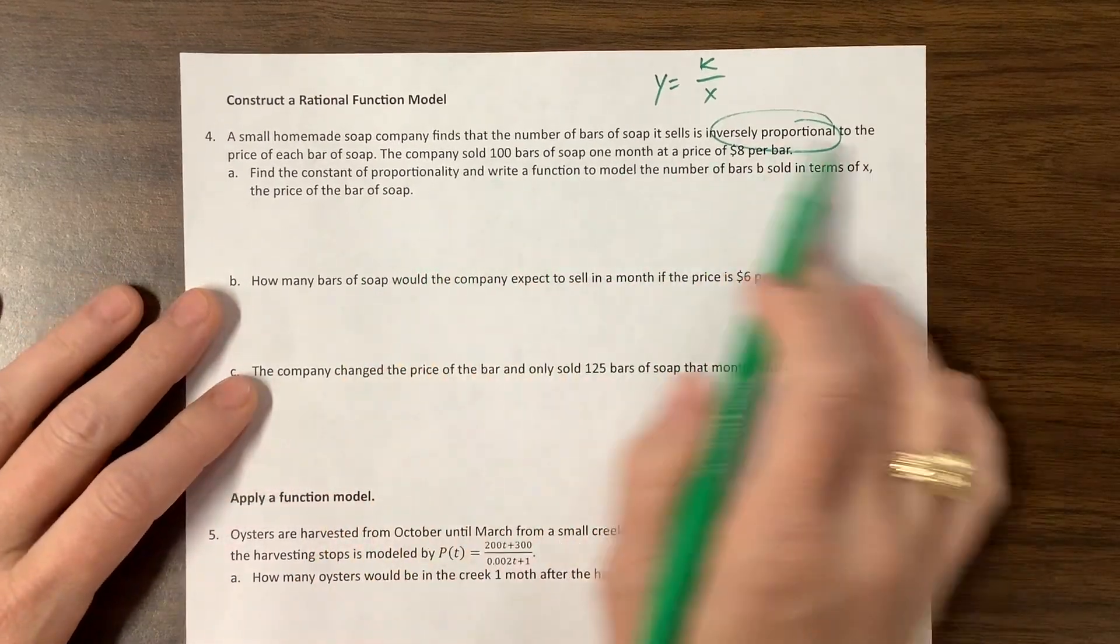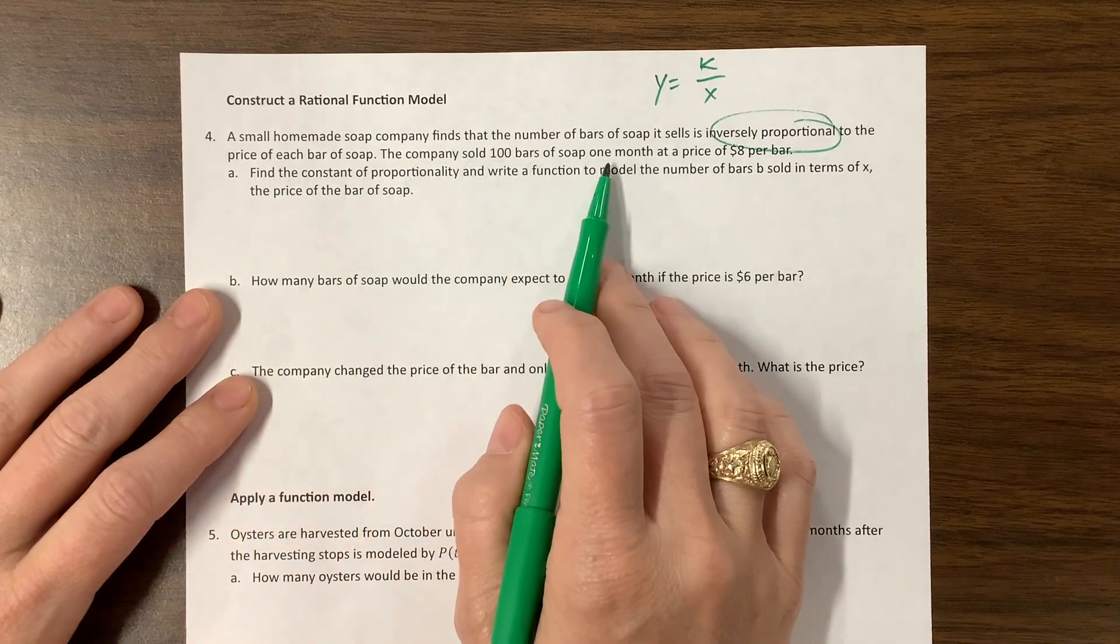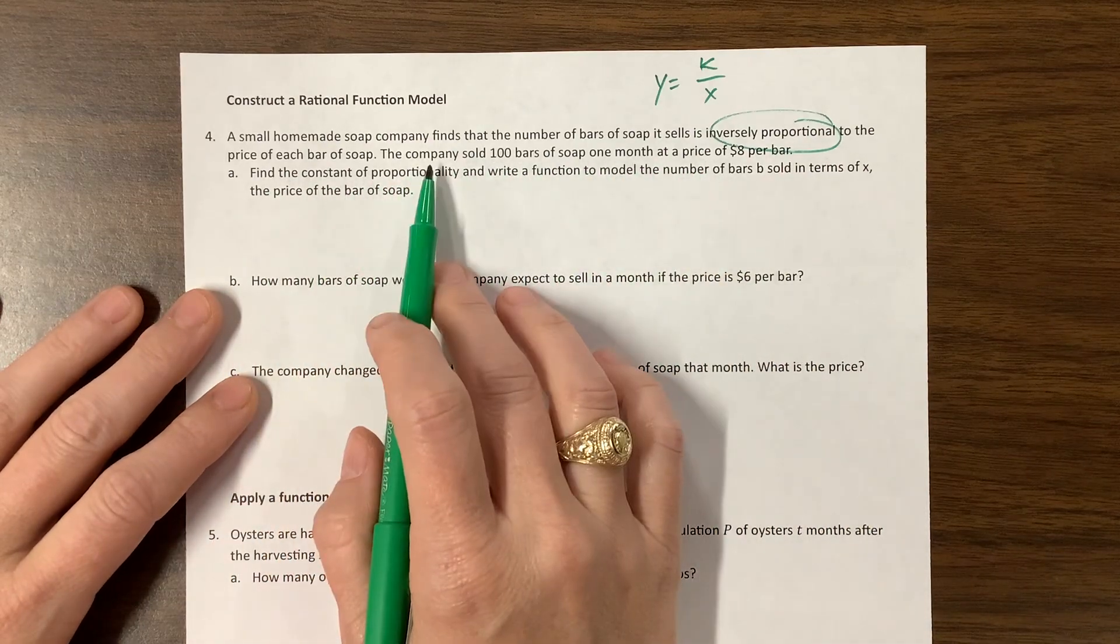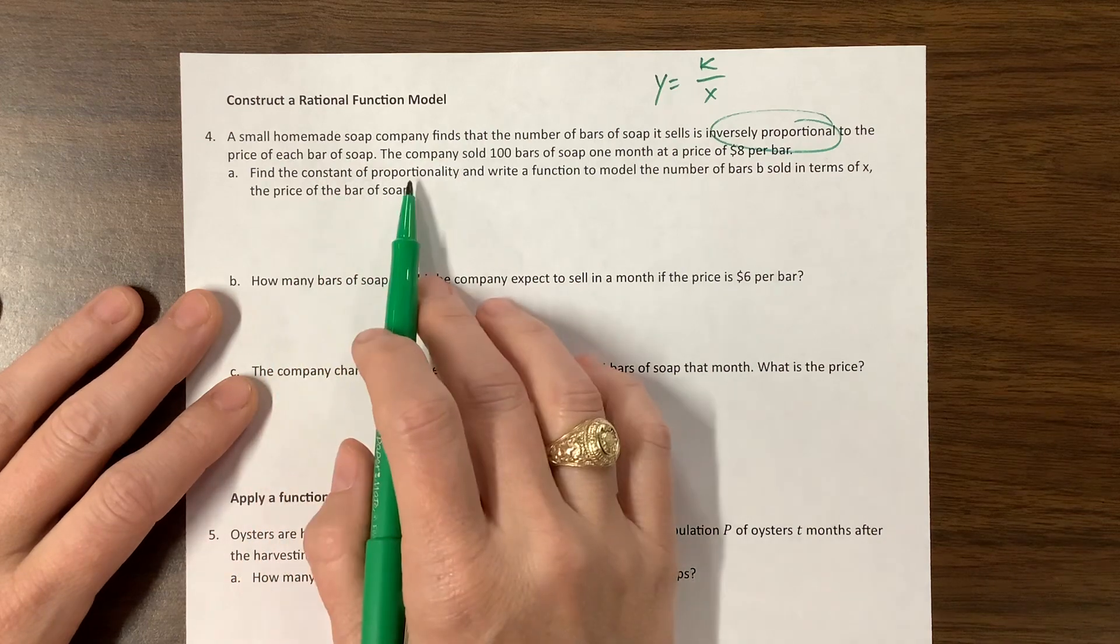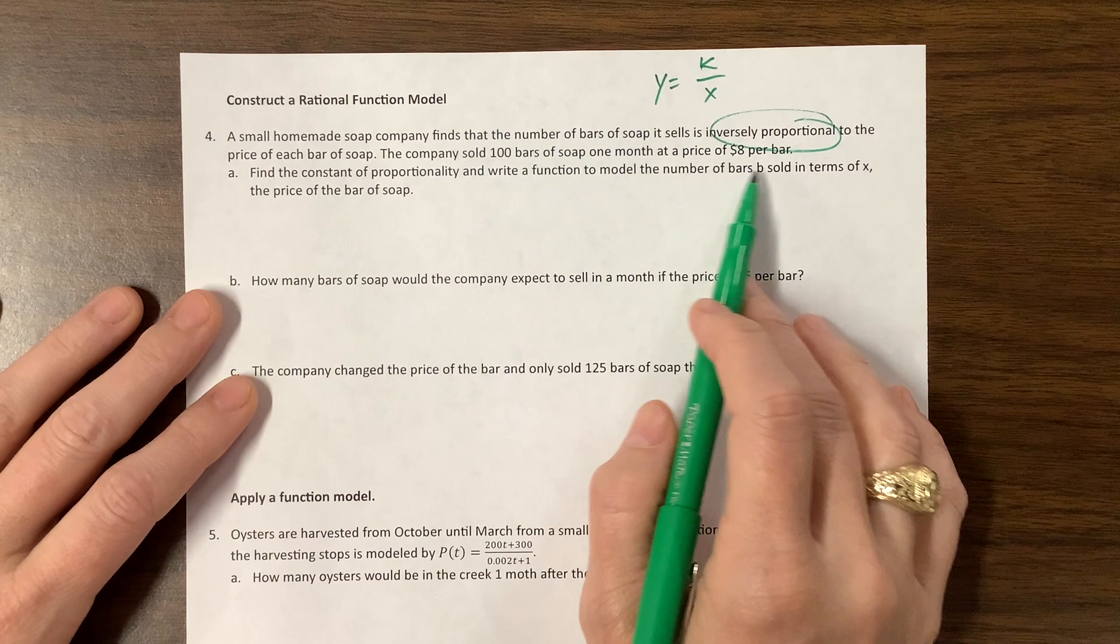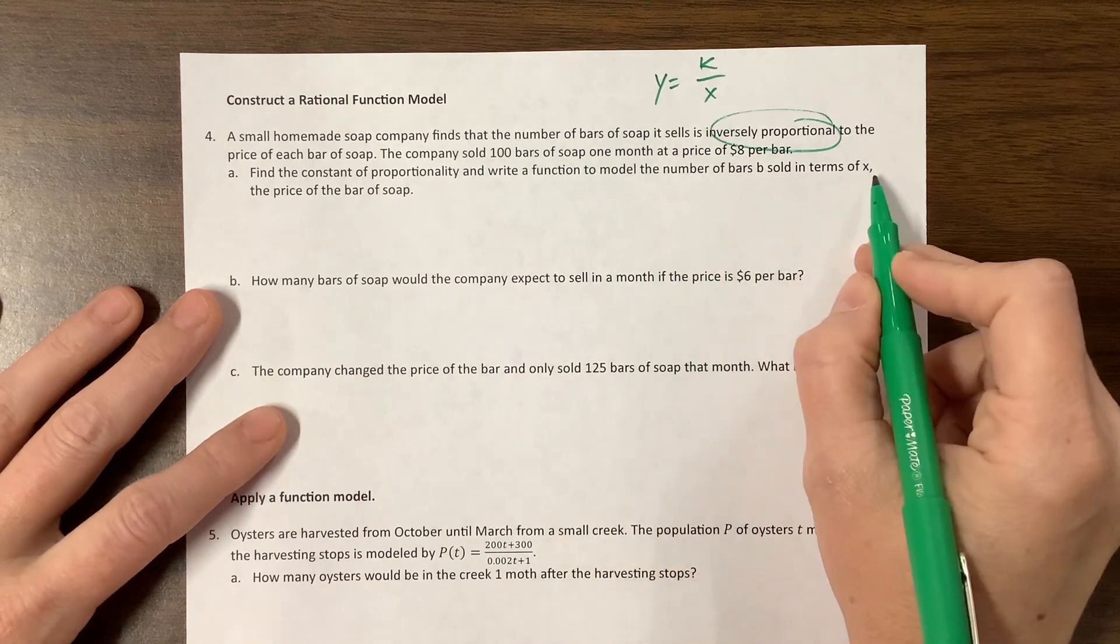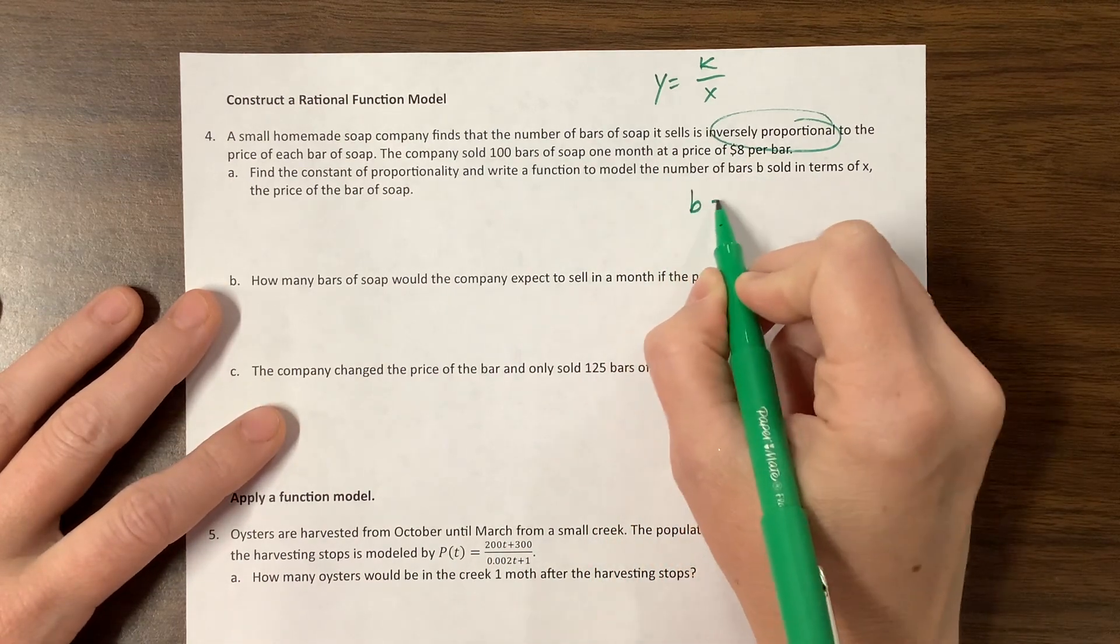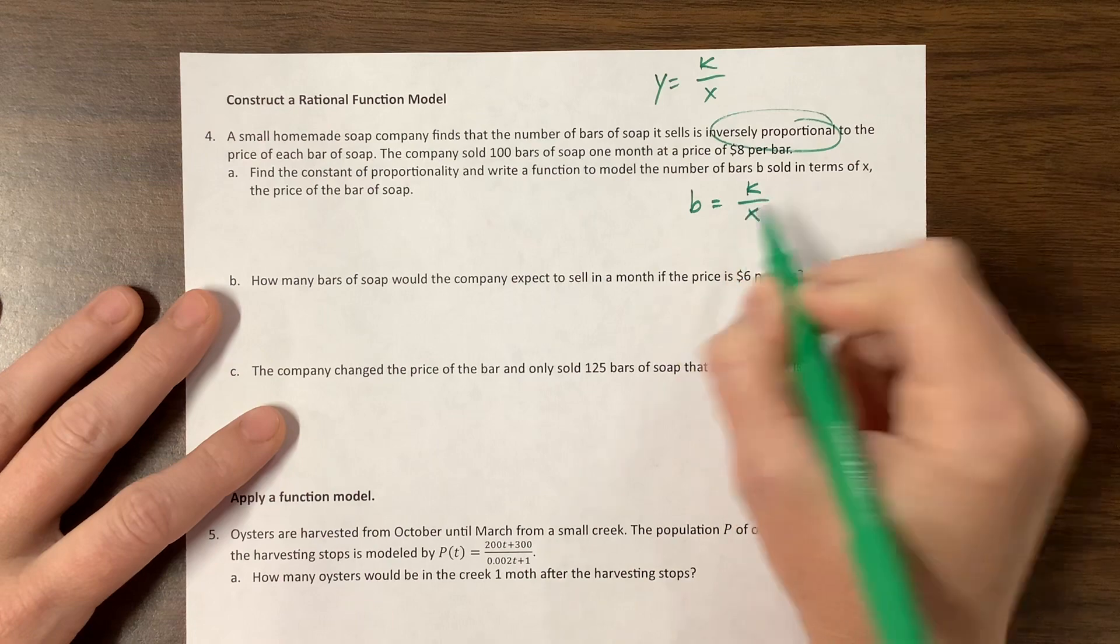So then they tell us the company sold 100 bars of soap. Well, let's see what their variables are. Find the constant of proportionality. The constant of proportionality is k, and write the function to model the number of bars b sold in terms of x, the price of the soap. So b, let's say b is equal to k over x.